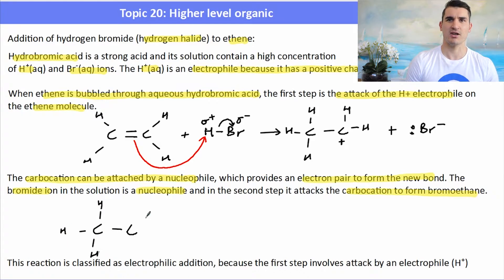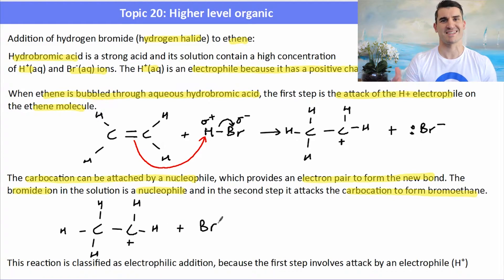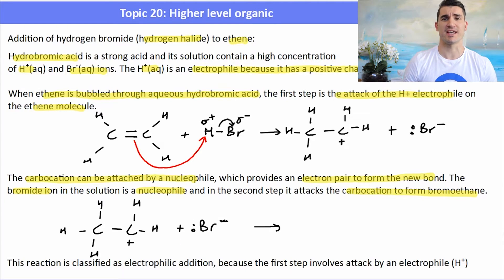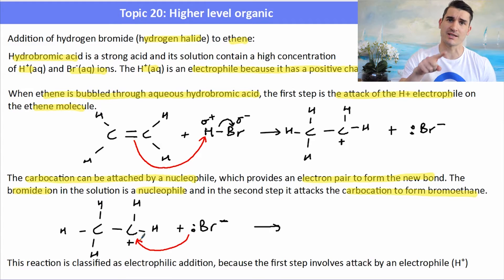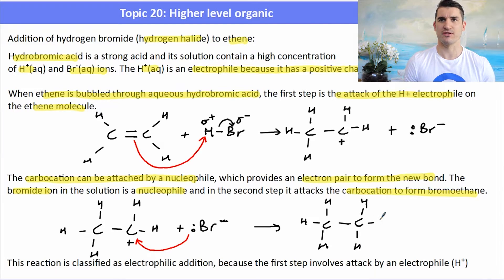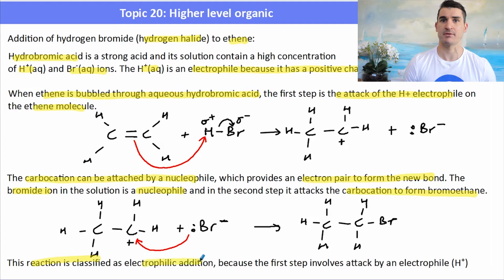Here we have our carbocation with a positive charge on that carbon, and our bromide nucleophile which has a negative charge and a lone pair of electrons that it can donate to the carbon. The electrons go from the bromine to the carbocation — we always draw the arrow going from the electrons to where they need to go. That forms our final product, bromoethane. This reaction is classified as electrophilic addition because the first stage involves attack by an electrophile — the H⁺ attacked the carbon-to-carbon double bond.